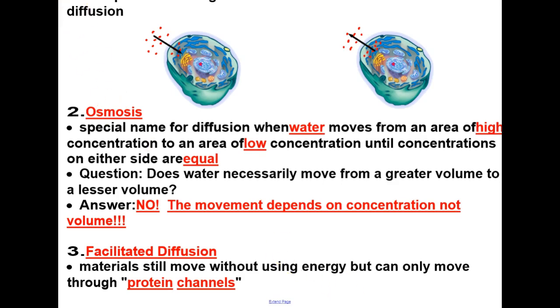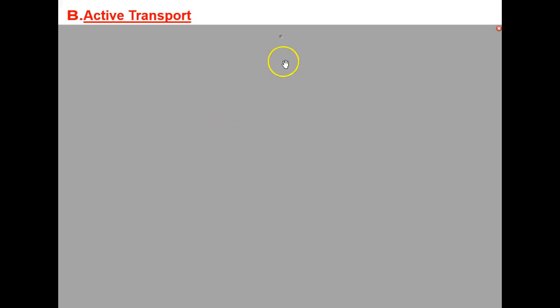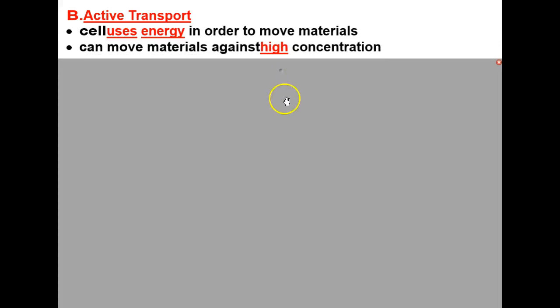Let's now take a look at three types of active transport. If passive transport is when a cell does not use energy to move materials, active transport is when cells use energy to move materials. In active transport, you can even move materials against a concentration gradient because the cell is using its own energy.